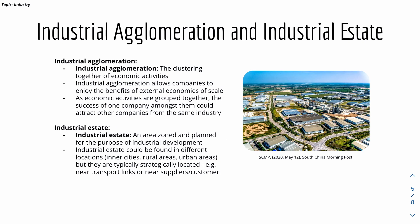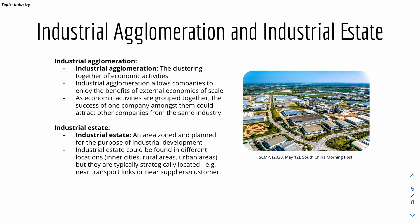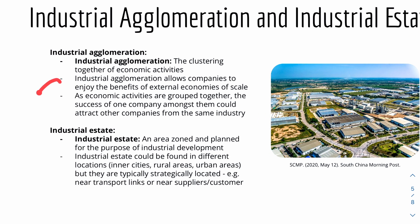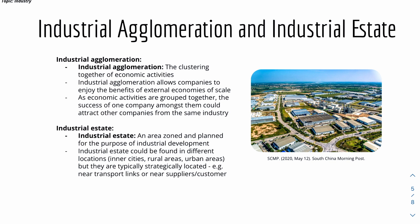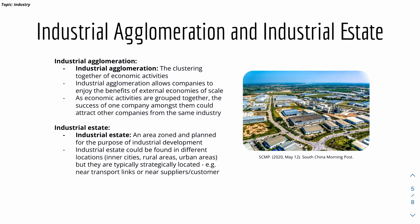Industrial agglomeration is the clustering together of economic activities. Here's a photo of factories to illustrate this. Industrial agglomeration allows companies to enjoy the benefits of external economies of scale, and because companies are grouped together, they create a multiplier effect — if one company succeeds, others may also succeed and attract more companies to that area. Industrial estate, on the other hand, is an area zoned and planned for industrial development, found in inner city, rural, or urban areas, and strategically located near transport links.